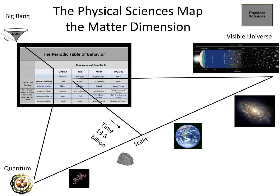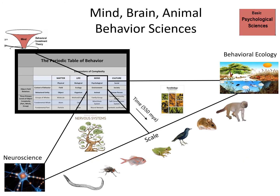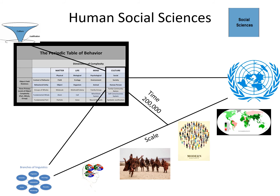Here we have a depiction of the physical sciences, which start with the fundamental quantum parts, move up into atoms, and then stretch across scale, reaching at its largest the entire visible universe. The biological sciences map the life dimension across scale. The mind-brain-animal behavior sciences, known as basic psychology on the Tree of Knowledge System, range from the scale of neural networks through the emergence of animals at different levels of complexity, all the way up to a socio-behavioral ecology. Finally, the human social sciences start at cognitive science into personality and human psychology, and then the social sciences proper — with anthropology, economics, political science, and sociology.